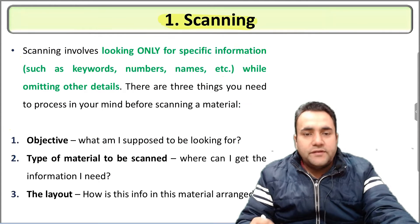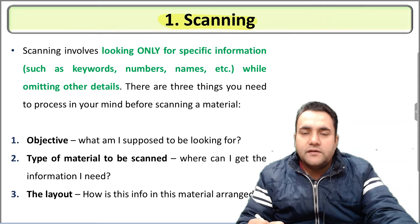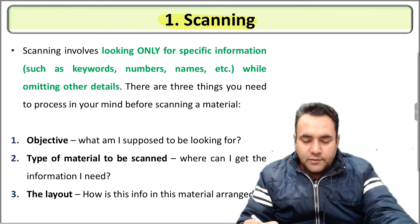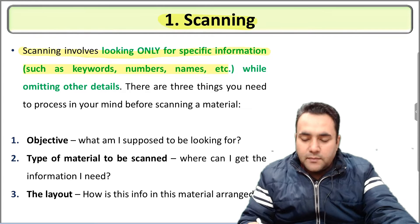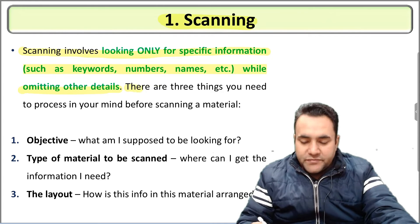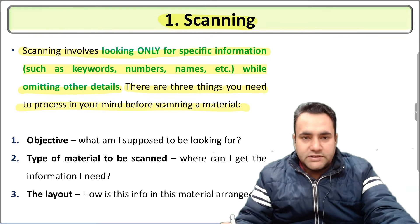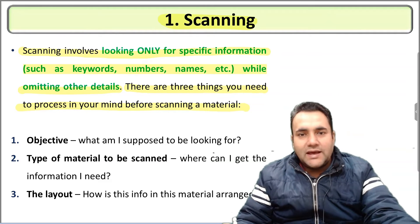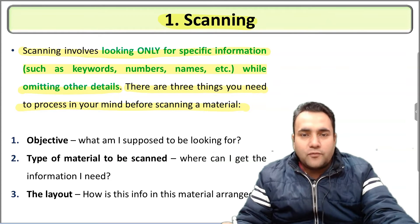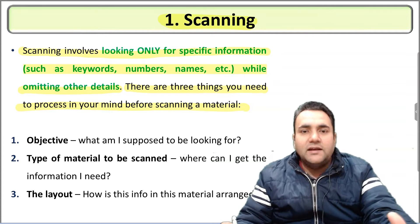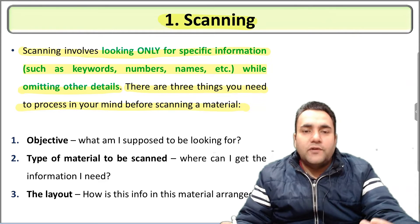First, let's talk about scanning. As the name suggests, scanning means to read something from the top — going over it quickly. Scanning involves looking only for specific information, such as keywords, numbers, names, etc., while omitting other details. In scanning, you already know what specific information you are looking for. For example, filling out a form, reading a restaurant menu looking for a specific dish, or searching for a job in the newspaper — that fast extraction of specific information from a large body of content is the process of scanning.